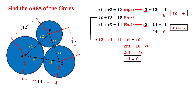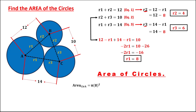Since we now have all the radii, we can find the area of all the circles. The formula for the area of a circle is pi times R squared. For the area of circle A, we have pi times R1 squared, and R1 equals 8, so this is equal to 64 pi, which is equal to 201.06. So this is now the area for circle A.